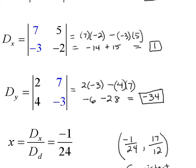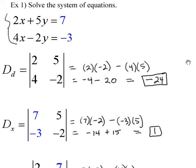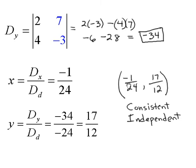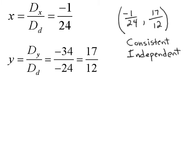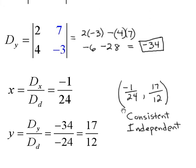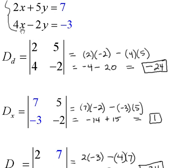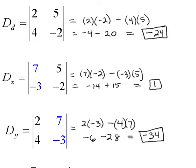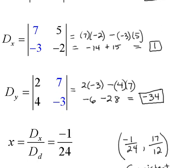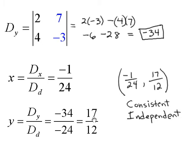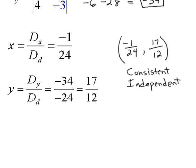If we had graphed these two equations on the same x-y axis, they would intersect at one point — but it would be tough to read that intersection precisely at negative one twenty-fourth and 17 twelfths. That's one advantage of Cramer's Rule and matrices. Also, if we had used the substitution method, imagine substituting x equals negative one twenty-fourth to find y. With Cramer's Rule, our calculations did not involve fractions until we combined the components at the end, and all we had to do was reduce a fraction — no messy fraction arithmetic mid-calculation.